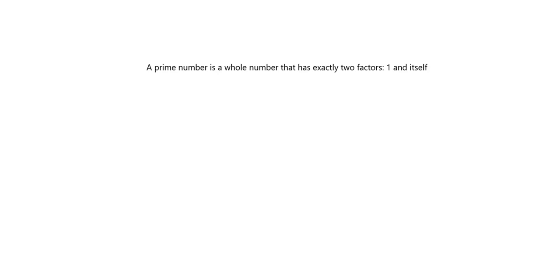Let's have a look at a few examples. Is one a prime number? Well, let's list the factors of one. The only factor that one has is one — that's the only thing that can divide in without remainder. So it doesn't have exactly two factors, so it is not a prime number.